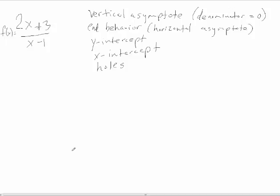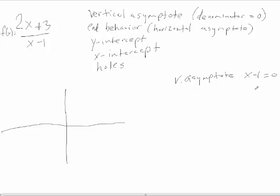Let's take f(x) = (2x + 3) / (x − 1). First, we look for the vertical asymptote, which occurs where the denominator equals 0 or the function is undefined. That occurs at x = 1, so the line x = 1 is our vertical asymptote.